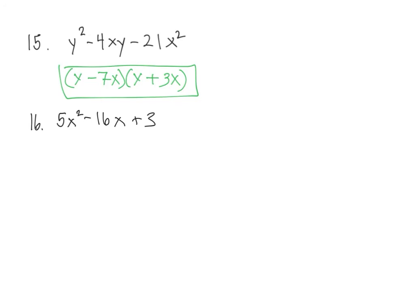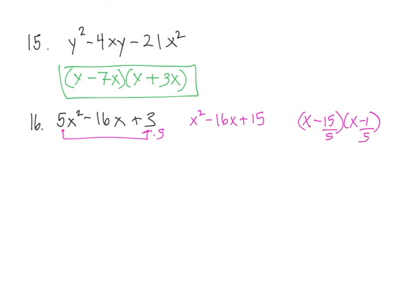Problem 16: we have no common factor. So I'm going to take this 5 and multiply the 3. That gives me x squared minus 16x plus 15. The factors of 15 that work are negative 15 and 1. Then we just go and divide by 5. We get x minus 3. On the second factor, let's bring the 5 up, and that's 5x minus 1.